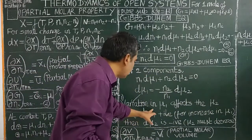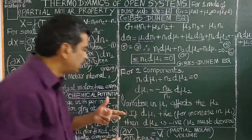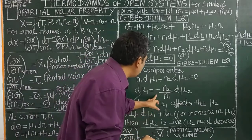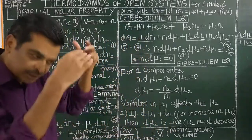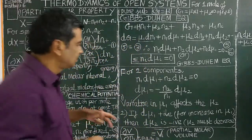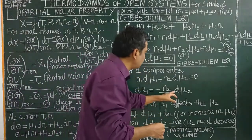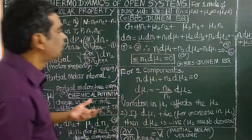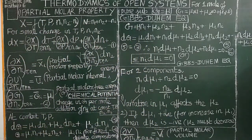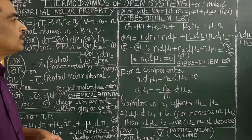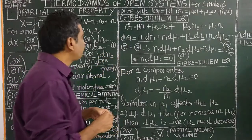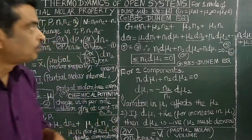So if the chemical potential of one component has a positive value, the chemical potential of the other component must decrease accordingly — equal to N1 dμ1. This relationship is very very important. Thank you for watching.